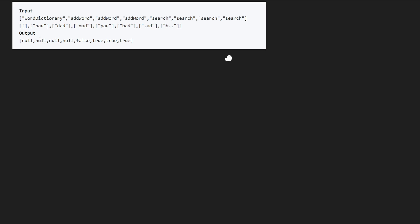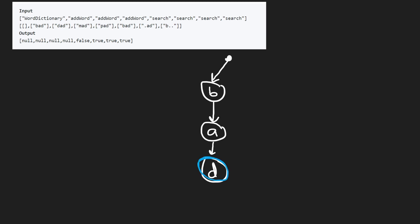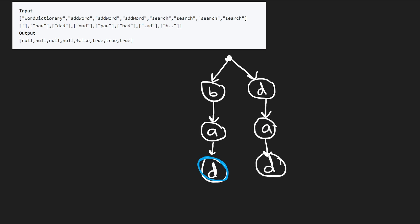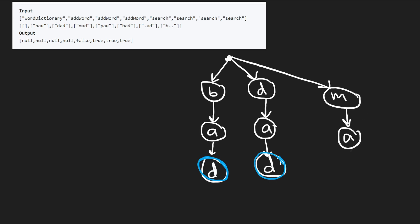Let's walk through the example. Adding 'bad': we insert nodes for 'b', 'a', 'd' and mark 'd' as end of word (shown in blue). Adding 'dad': we start a different path since it has a different prefix, inserting 'd', 'a', 'd' and marking the last 'd' as end of word. Adding 'mad': insert 'm', 'a', 'd', marking end of word. We now have three words, all ending in 'd' but along different paths.